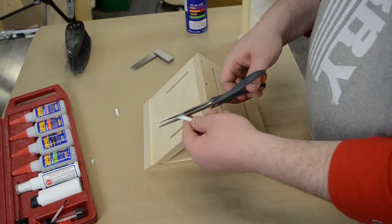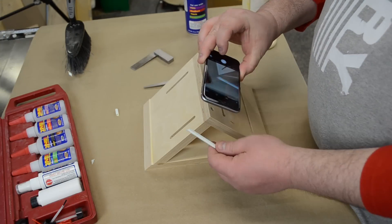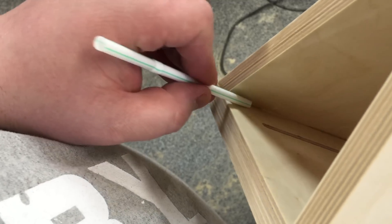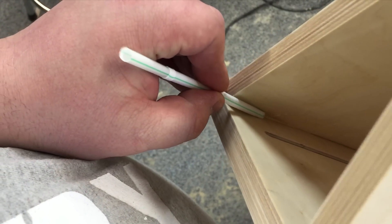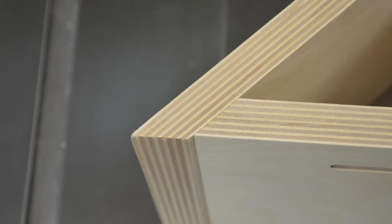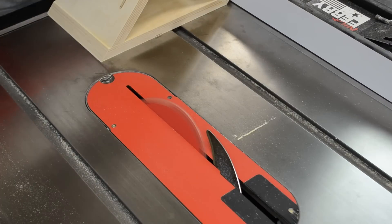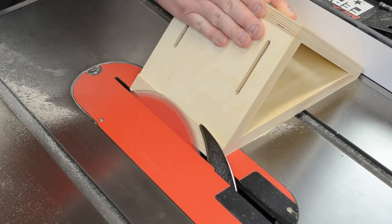If you get squeeze out on the inside of the triangle and you're as picky as I am, a drinking straw cut at an angle can clean up some of that squeeze out. Here you can see that one piece being left a little bit long. With the blade on the table saw tilted to 45 degrees it could be cut flush with the other piece.